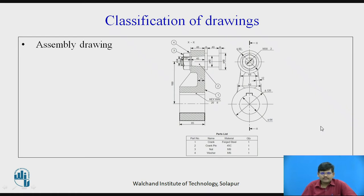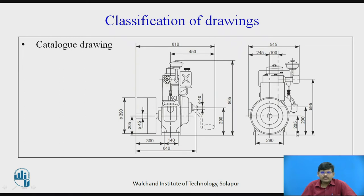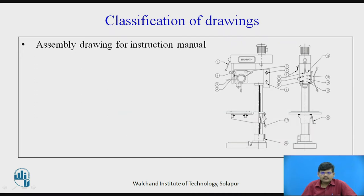Then we have assembly drawing — a drawing of all the assembled components as a single unit. All the components that are assembled together are drawn, and a table is provided. Then we have catalog drawing, which is provided with the product when you buy it. After that, we have assembly drawing for instruction manuals. When you buy a new automobile, you have a manual in which you can find these kinds of drawings, where each part is numbered and the description of each part is given.